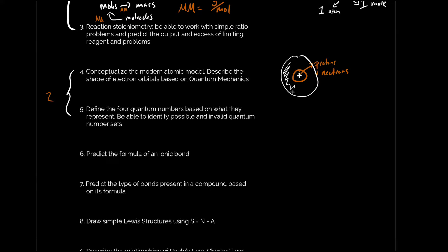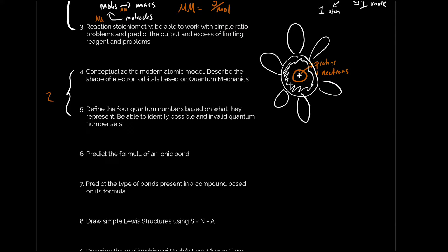Instead, quantum mechanics suggests it is more of a cloud. If you draw an s orbital it's more like a sphere; if you draw a p orbital it might be more like a dumbbell shape. So the atomic model is a positively charged nucleus consisting of protons and neutrons, and the negatively charged electrons exist in these cloud-like orbitals. I've got a better drawing of this in my help sheets.